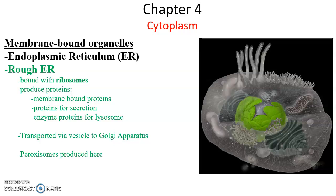The rough endoplasmic reticulum produces membrane-bound proteins — those proteins found in the plasma membrane — proteins that are to be secreted outside of the cell, and enzymatic proteins for the lysosomes, which are special dangerous proteins that need to be kept isolated. The rough ER produces its proteins and then transports them via vesicle to the Golgi apparatus. It also turns out that the organelle peroxisome is formed from the rough endoplasmic reticulum.